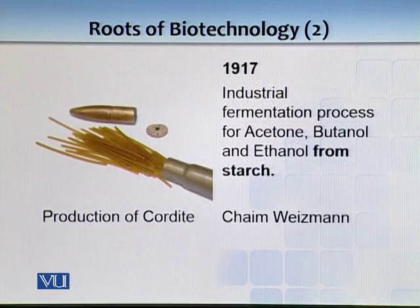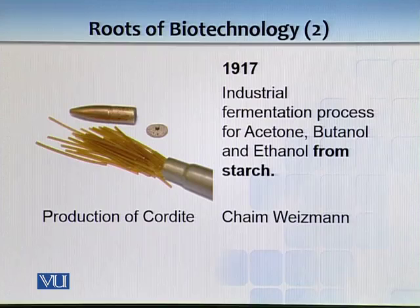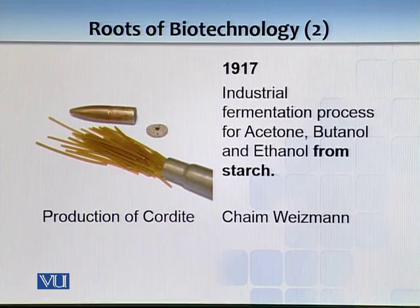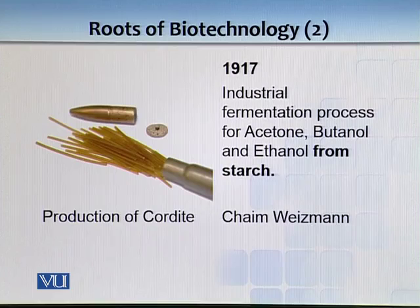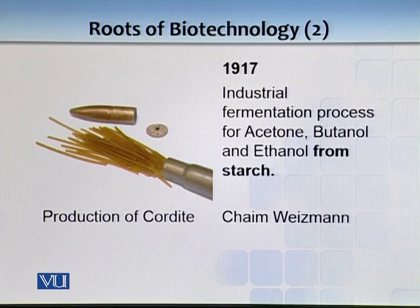In 1917, another major industrial process started: the fermentation of starch to produce acetone, butanol, and ethanol. This was important because it was the period of World War 1 — butanol was specially used to make cordite, a small explosive fiber you can see on your screen. This process was championed by Chaim Weizmann. Now, as of 2015, butanol is coming back as a biofuel, after cordite was replaced by modern explosives.